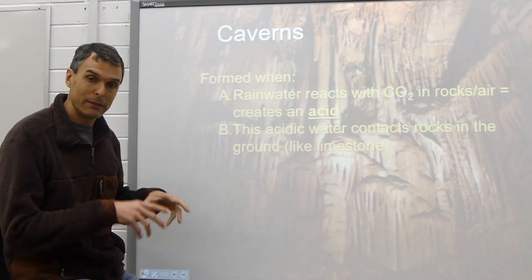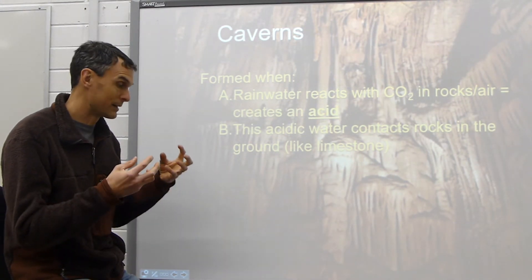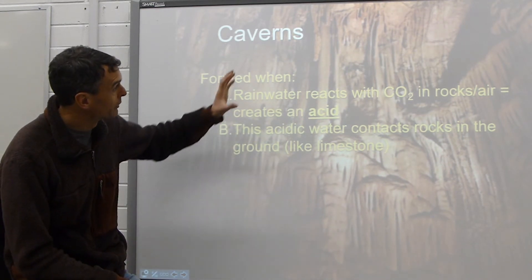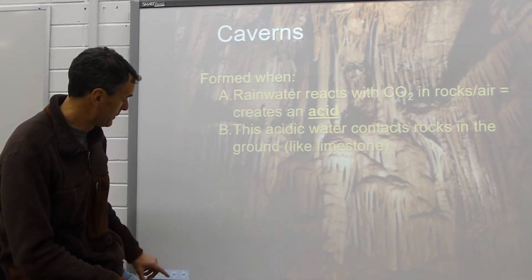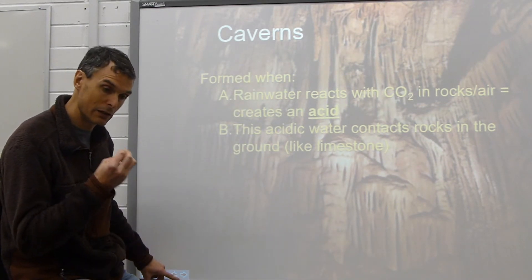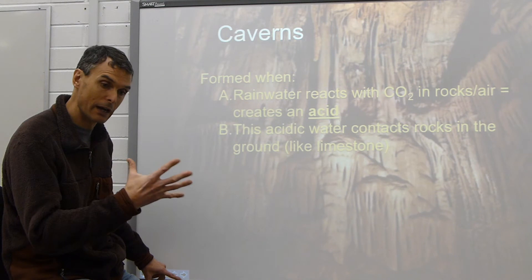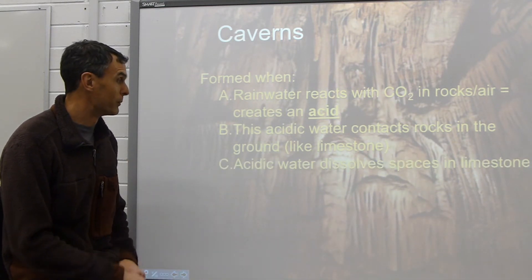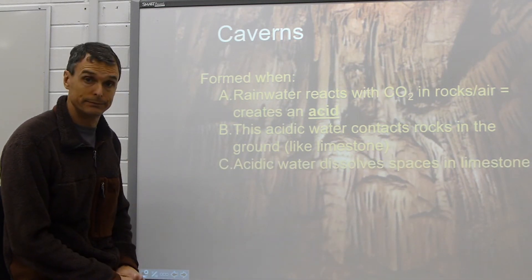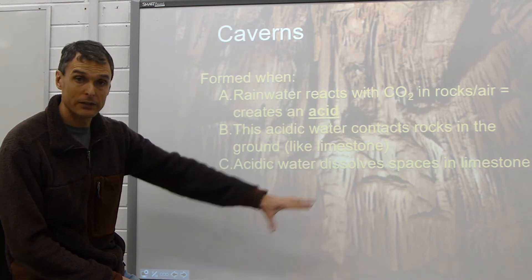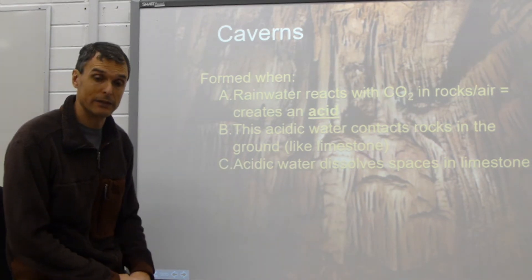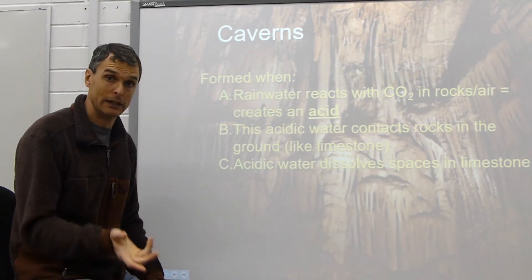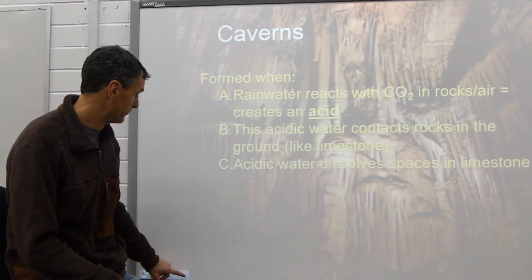The acid is going to eat away at the rocks, dissolving them, and it's going to take that dissolved material and deposit it elsewhere, creating all these crazy cave formations. It slowly opens up areas within the rocks, forming the caves. Specifically, the rock it reacts with is limestone — we looked at limestone when we studied rocks earlier in this class.